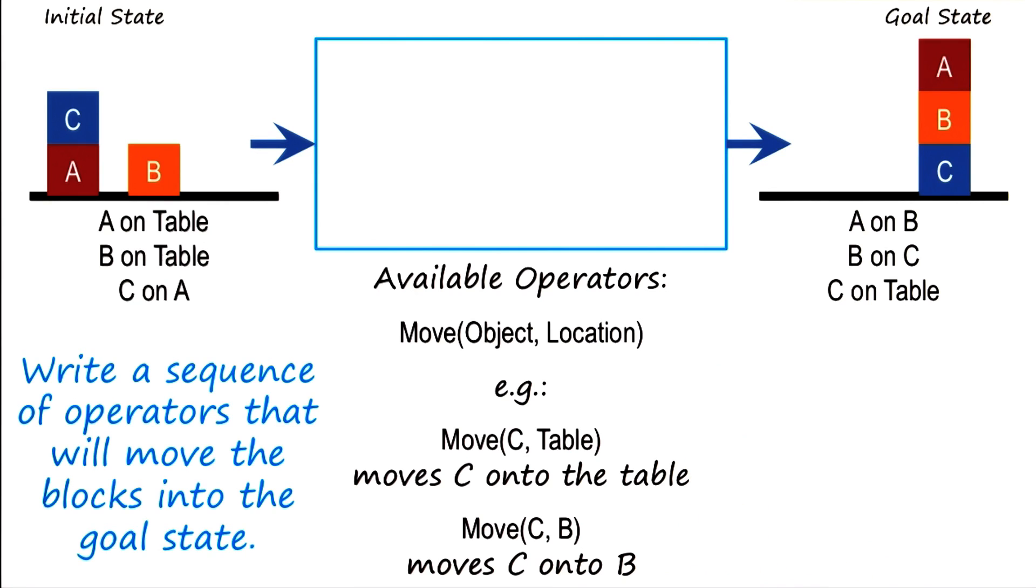Given these operators, and this initial state, and this goal state, write a sequence of operations that will move the blocks from the initial state to the goal state. So let's look at the goal state.